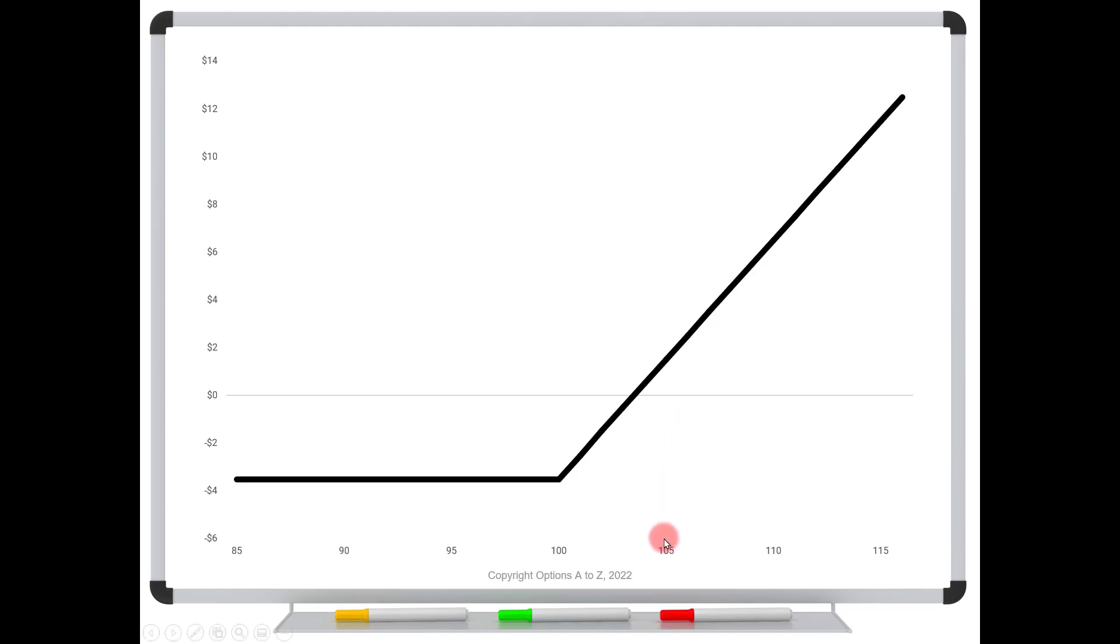Let's say that the stock is $105 going into the expiration bell. Trace a line, an imaginary line, from $105 up to the black line, look left, and it looks like it's lined up at $150. That's because this option would be worth $5. You paid $350, so the profit to you is $1.50. But that's only right at expiration and only if the stock is exactly $105.